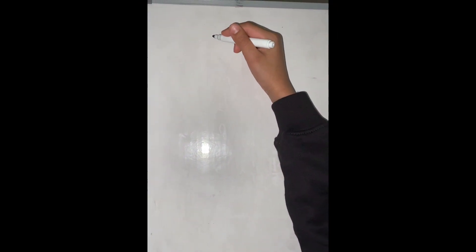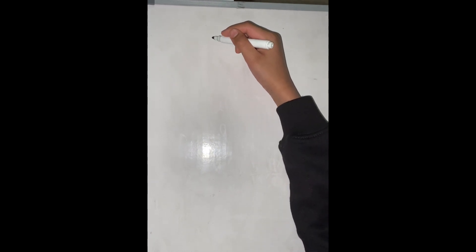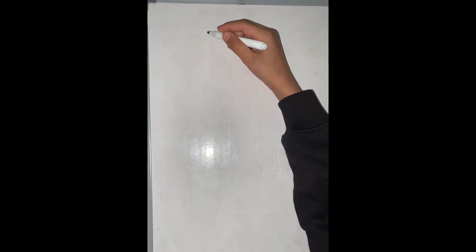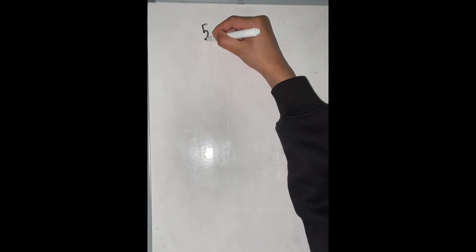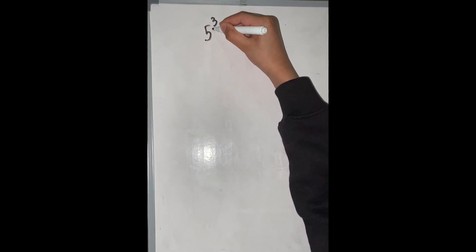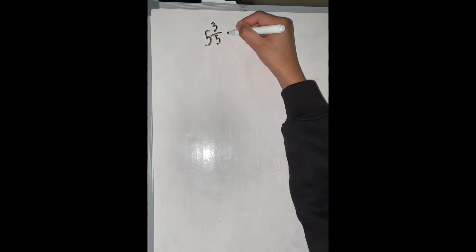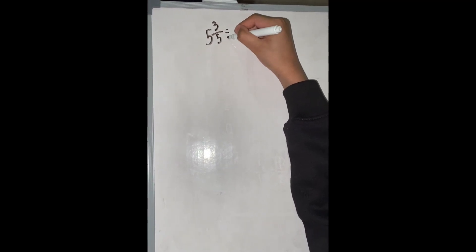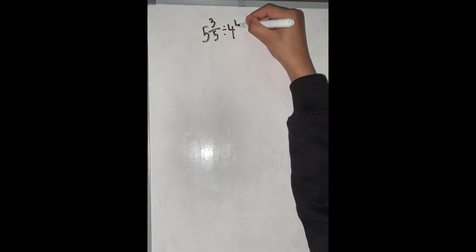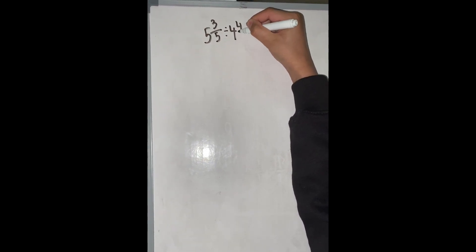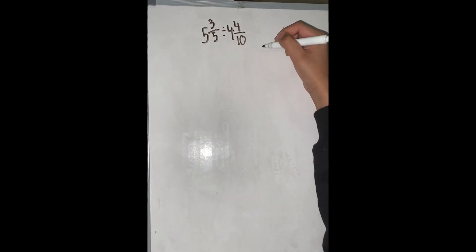This is Dividing Mixed Numbers Part 2. The first question is 5 and 3 over 5, divided by 4 and 4 over 10.